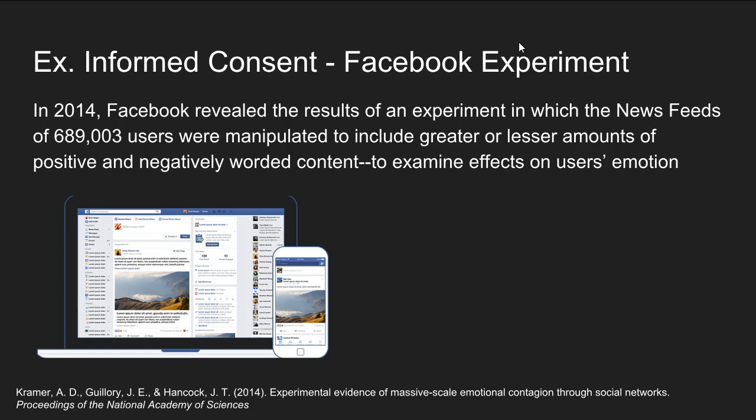However, one of the issues with this research is that there were questions about whether the 689,000 participants were truly informed about their participation. The researchers used the user agreement that people sign when they first sign up for Facebook, arguing that this represented informed consent. Critics argued that if these people were not truly aware they were participating in an experiment, they could have been exposed to undue psychological harm.